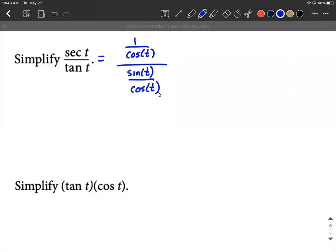From here we have fractions within fractions, so it goes back to some algebra as far as simplifying. Some people refer to this as keep change flip where you keep the top fraction, change from division to multiplication, and then multiply by the reciprocal of the denominator, so cosine of t over sine of t.